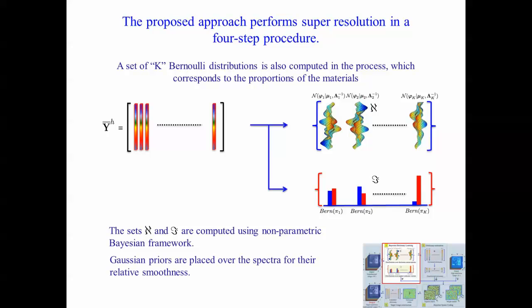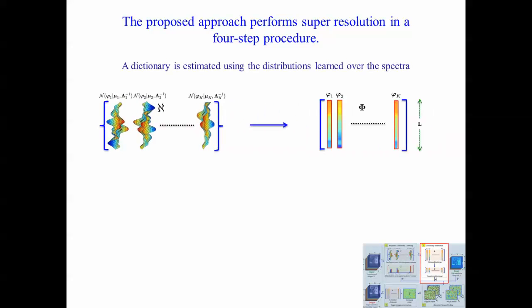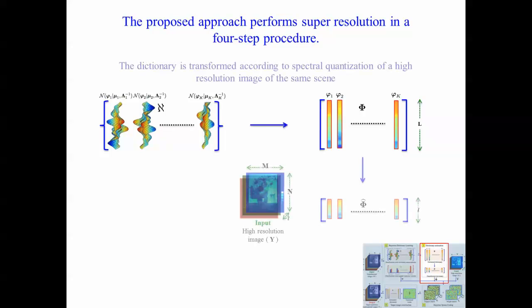We place Gaussian priors over the distributions for the spectra, which enforces our prior belief of relative smoothness of the spectra. The distributions over the spectra are used for estimating the dictionary. Each of the K atoms of the dictionary is computed as the mean of multiple samples drawn from the corresponding distribution. The dictionary is then transformed according to the spectral quantization of the available high-resolution image of the scene.